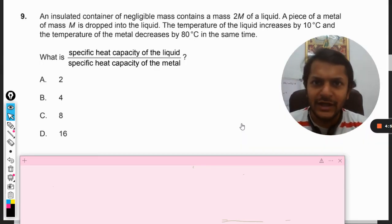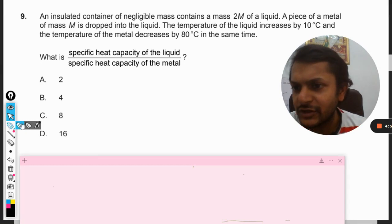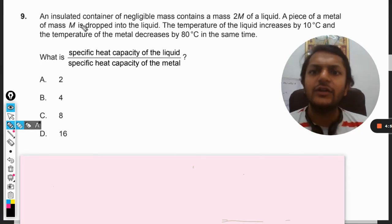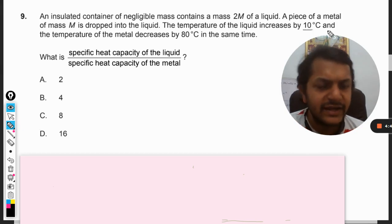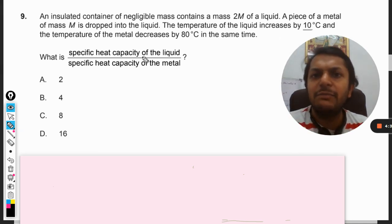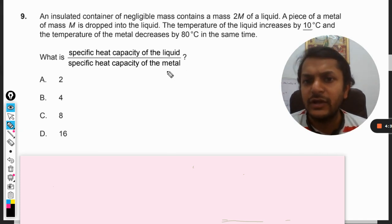Okay dear students, let us see what is there in this question. An insulated container of negligible mass contains a mass 2M of a liquid. A piece of a metal of mass capital M is dropped into the liquid. The temperature of the liquid increases by 10 degrees C and the temperature of the metal decreases by 80 degrees C at the same time. So what is the specific heat capacity of liquid and specific heat capacity of metal?